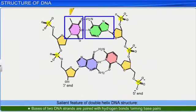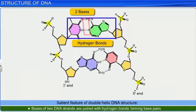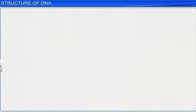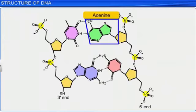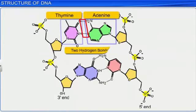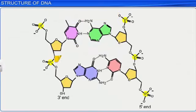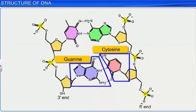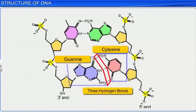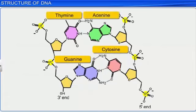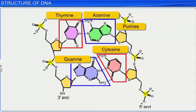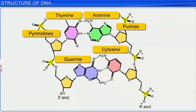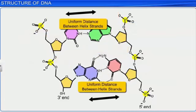Moreover, the bases of the two DNA strands are paired with the help of hydrogen bonds, forming base pairs. Adenine is bonded with thymine from the opposite strand with 2 hydrogen bonds, and vice versa. Similarly, guanine is bonded with cytosine with 3 hydrogen bonds. Because of this structure, a purine always comes opposite to a pyrimidine, which results in a uniform distance being maintained between the two helix strands.